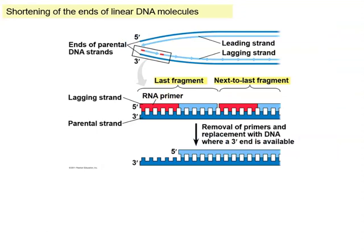Every time DNA is replicated, we're going to be dealing with these little unfinished ends. What that means is DNA is going to get shorter and shorter with each round of replication. At first this might seem like a problem, but it really isn't, because at the ends of chromosomes we have repeating sequences of nucleotides.